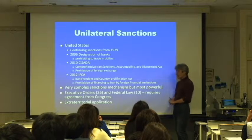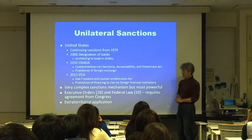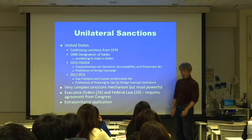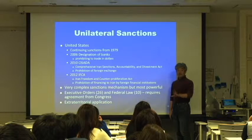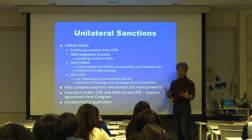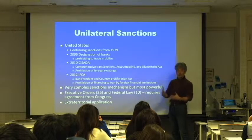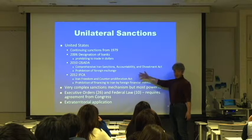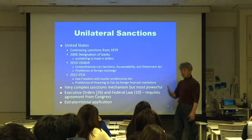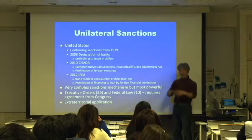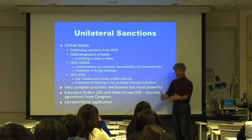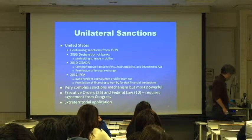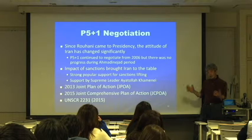This IFCA — pushing foreign companies and banks under US law — cannot be done by the UN. The UN is not a financial institution; we don't have the power to control foreign banks or SWIFT. But the United States does, and the European Union does. So there is a general collaboration between the UN, EU, and United States to push Iran to the negotiation table.